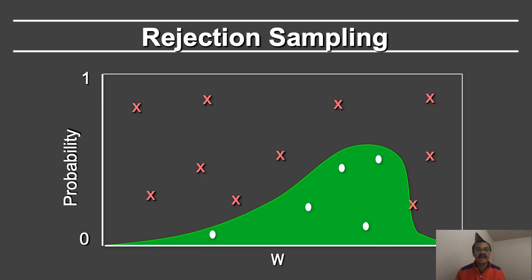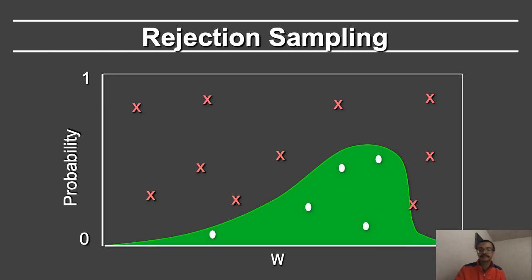On the other hand, the x's are rejected because they lie outside the original probability distribution function. Mathematically, that can be viewed like this. You are trying to find an integral, which is the integral of f dx, where x goes from 0 to 1. You replace that integral with an integral over the entire square.